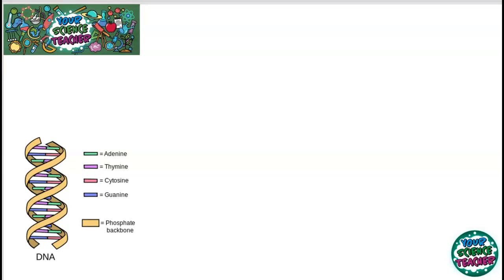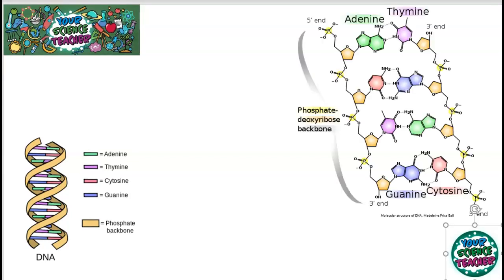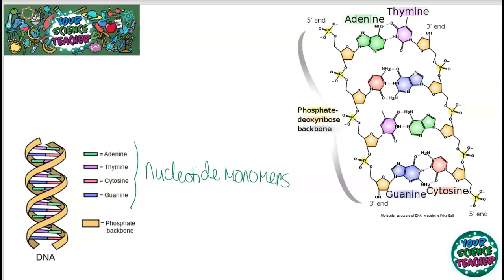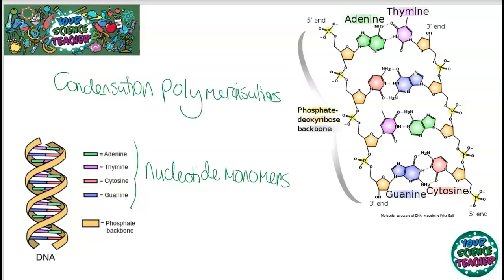Perhaps the most important naturally occurring polymer is DNA — the backbone for all life on this planet. DNA is actually made up of two polymer chains side by side. There are four nucleotide monomers that make up DNA: adenine, thymine, cytosine, and guanine. The whole structure of DNA works on the principle of condensation polymerization to join up the repeating units. Looking at the base pairs, G is always next to C and A is always next to T, because of strong intermolecular forces between complementary base pairs.